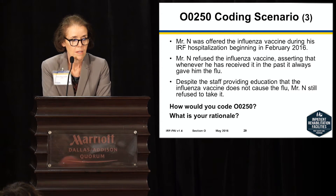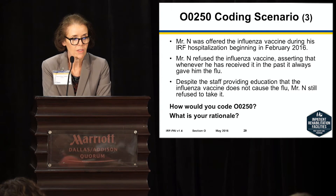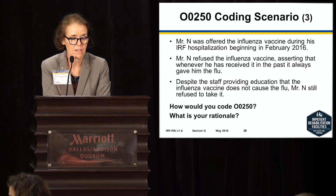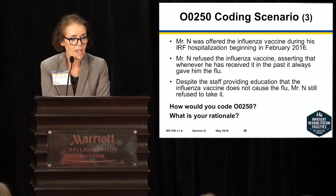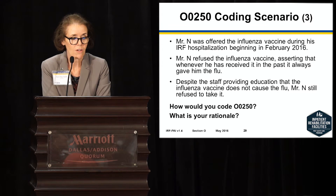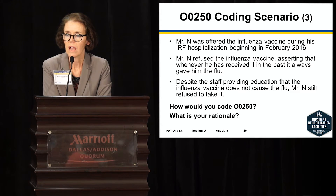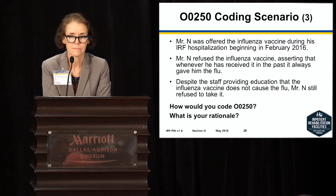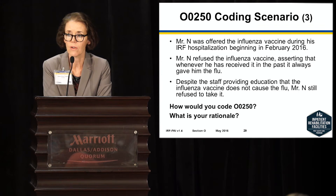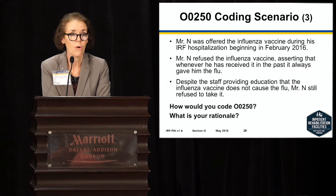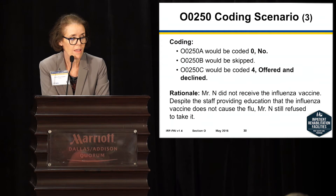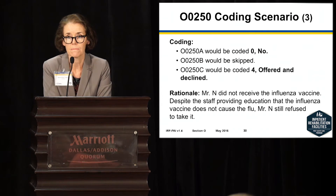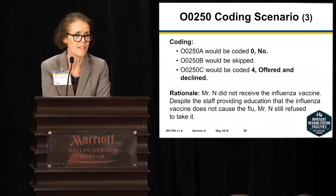Mr. N was offered the influenza vaccine during an IRF hospitalization beginning February 2016. He refused the vaccine, asserting that whenever he received it in the past it always gave him the flu. Despite staff providing education that the vaccine does not cause the flu, Mr. N still refused. So O0250A is no, we skip O0250B, and we enter the reason we did not give it — because we offered it but he declined.